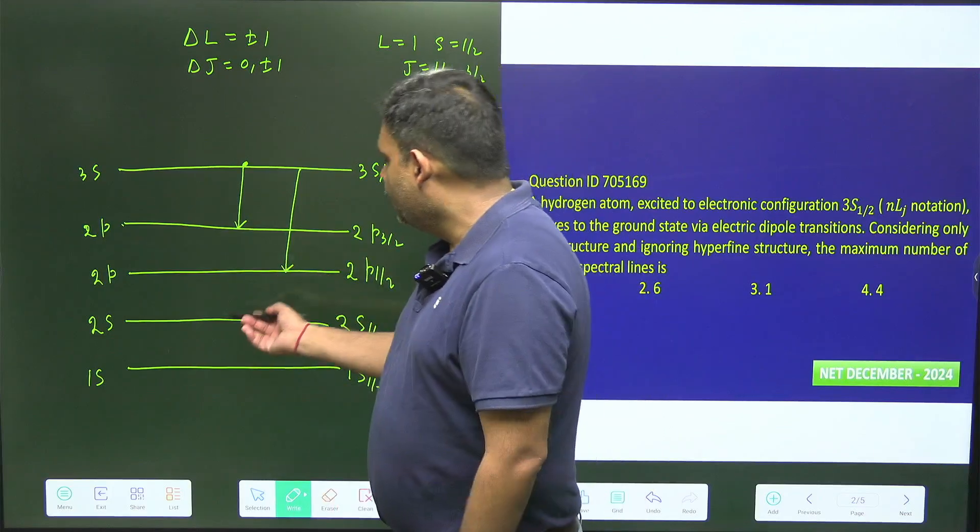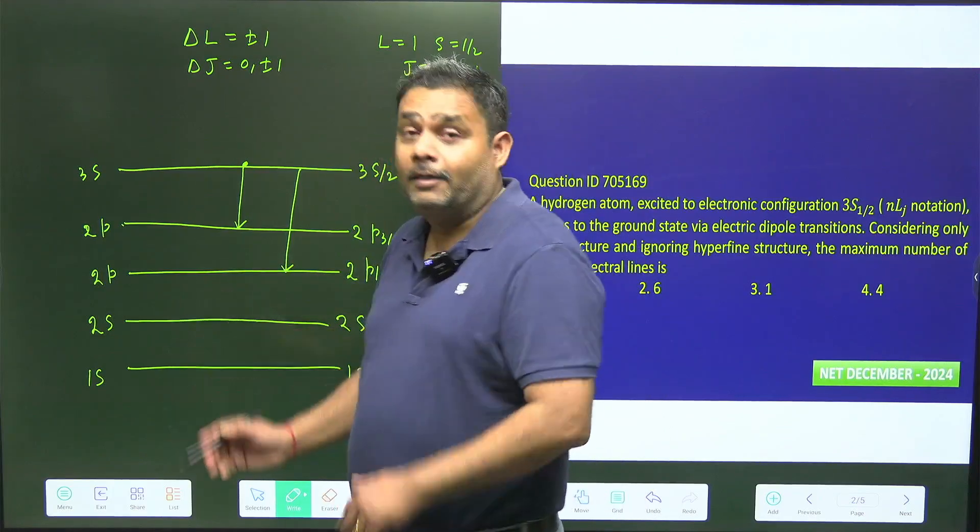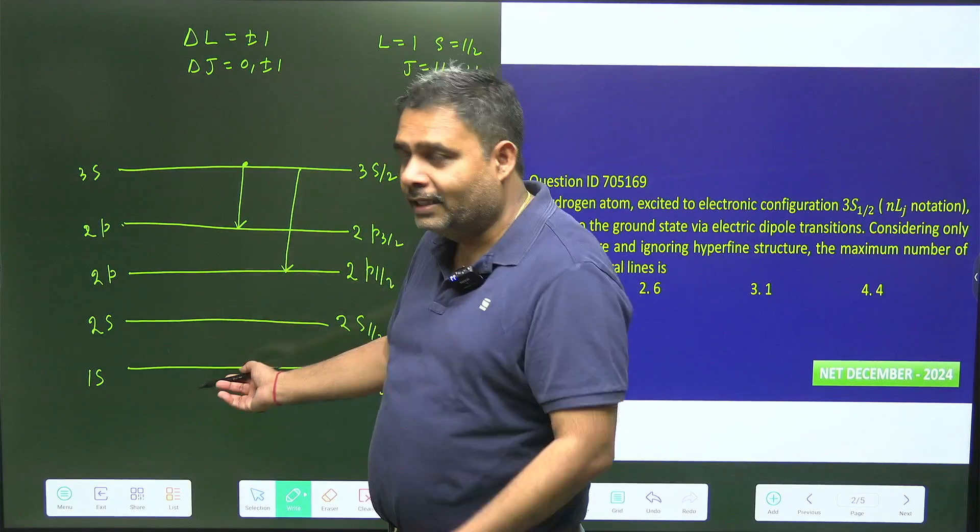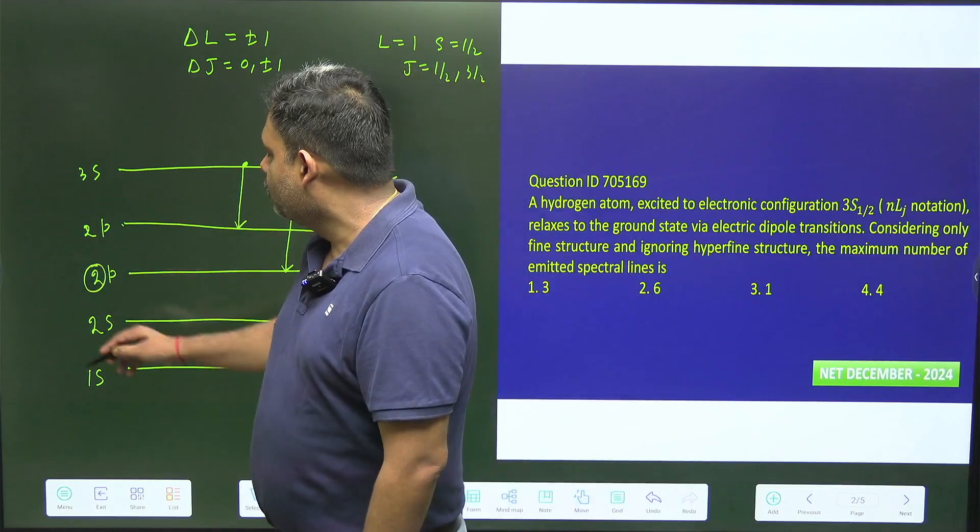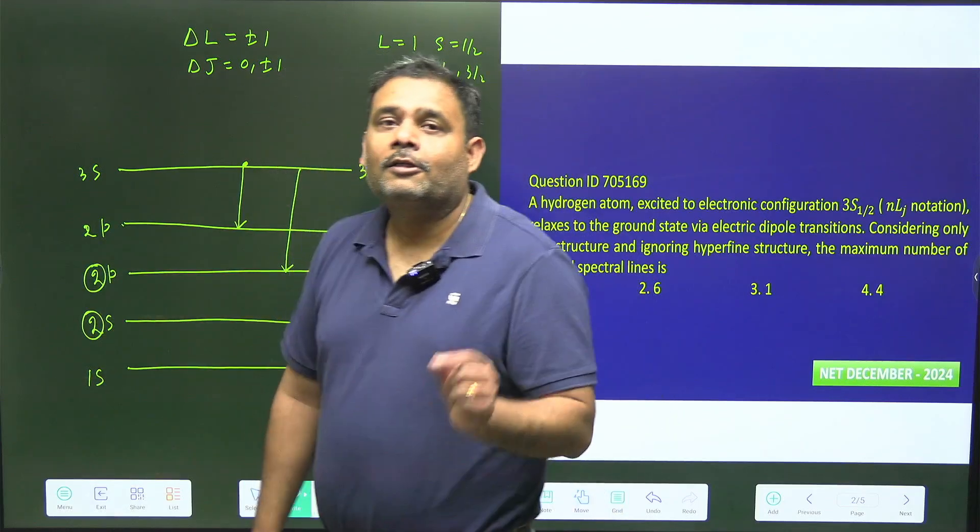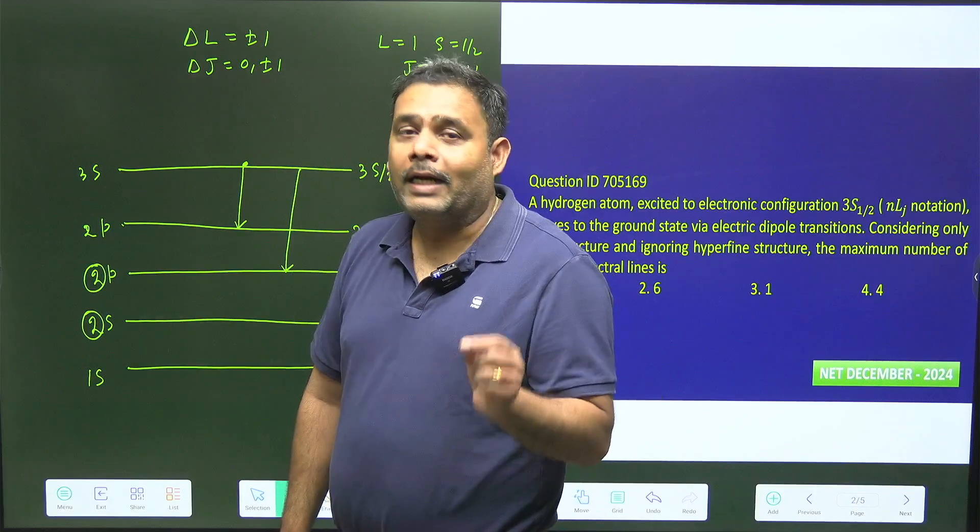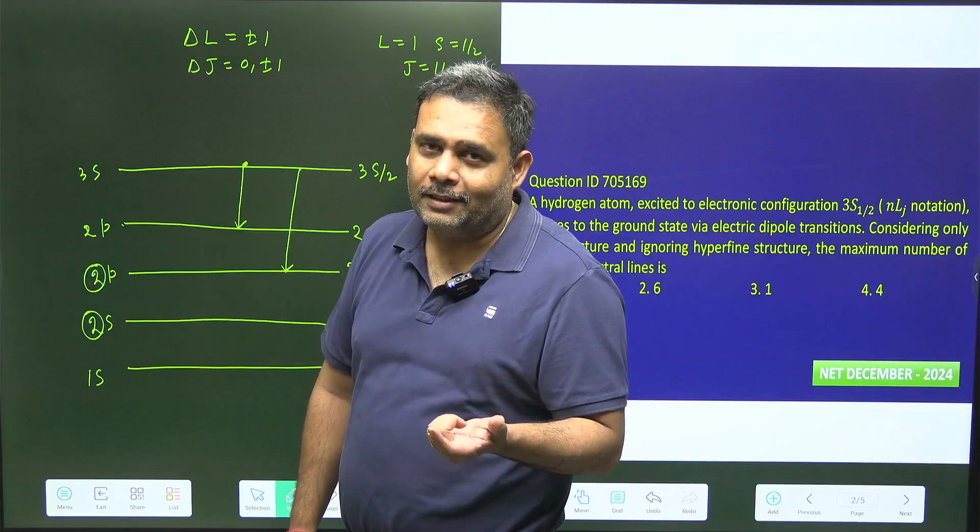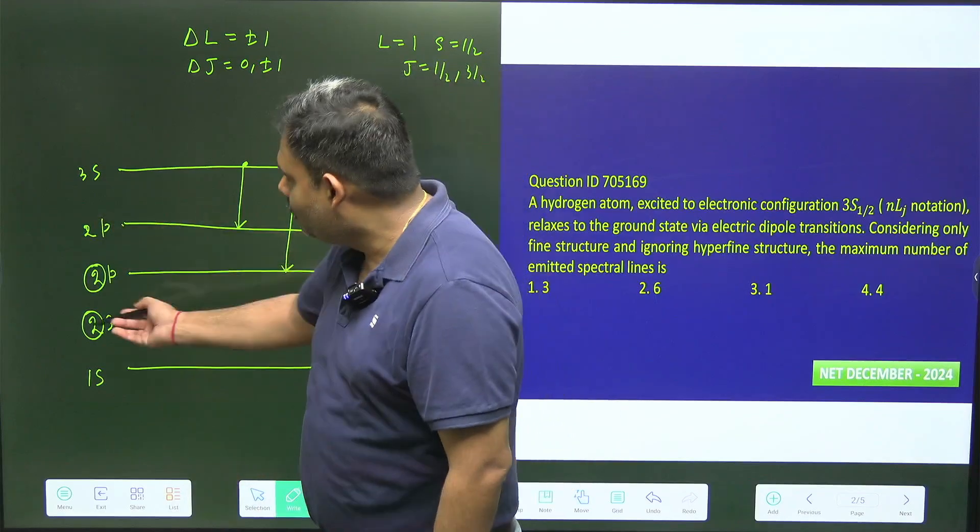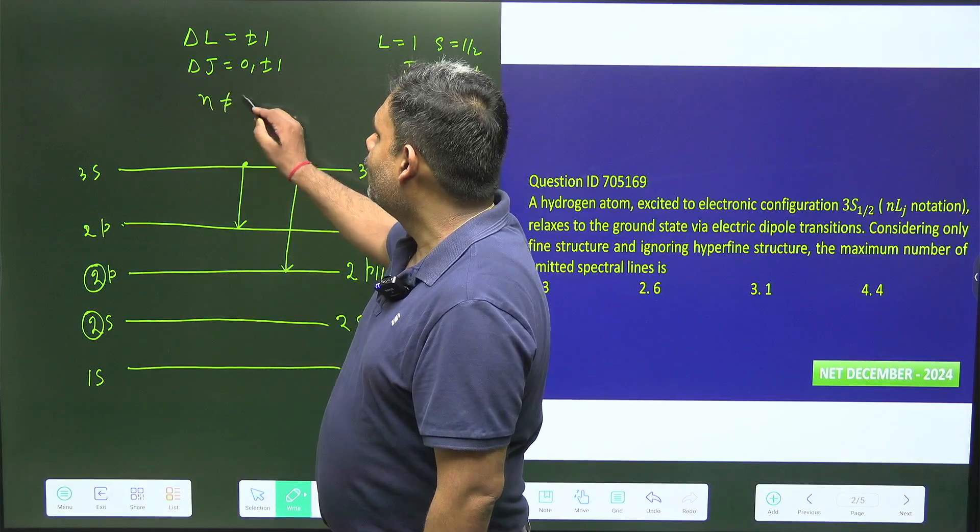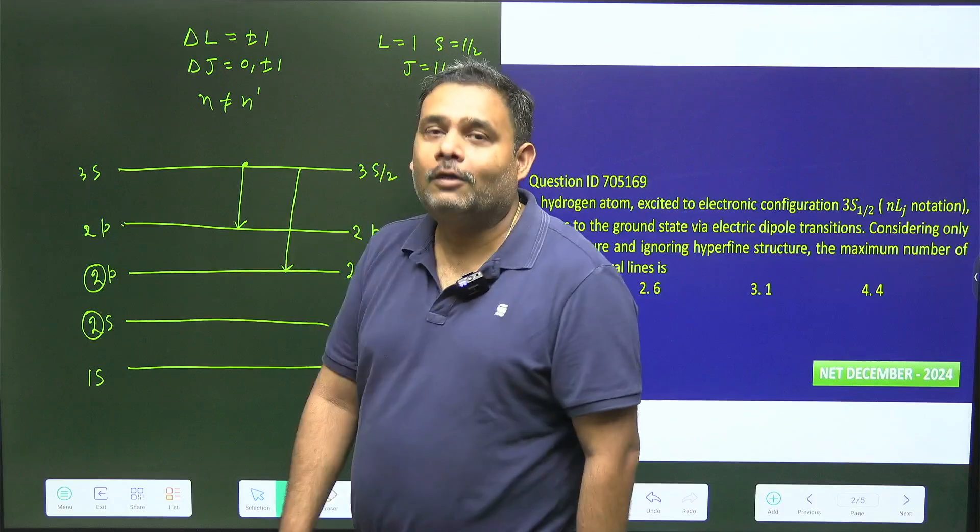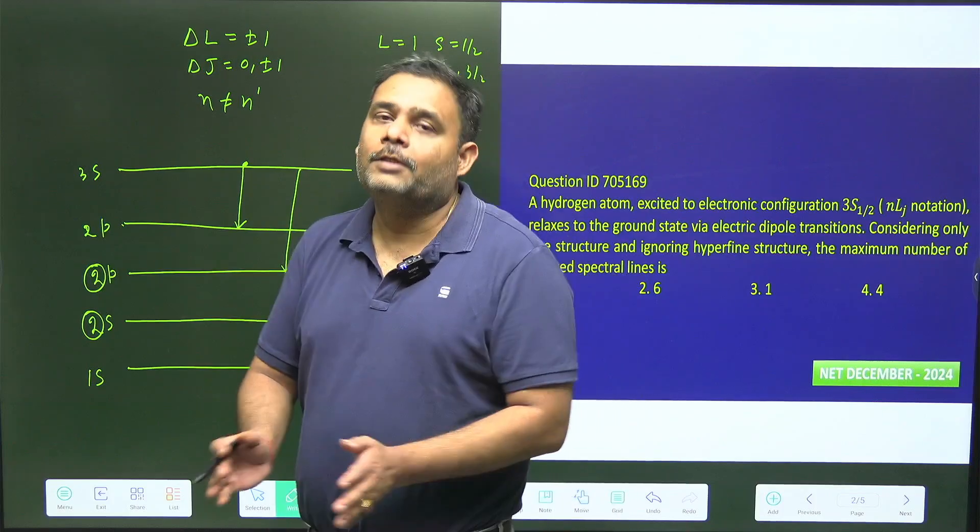Now there is a question: why will the electron not go to 2s level? It may be possible it will go to 2s level and then come. No, it will not go to 2s level because n equals 2 to n equals 2 is also not allowed. So n is equal to 2 to n is equal to 2 is also not allowed. So here you have to also talk about n should not equal to n dash. You have different principal quantum numbers.